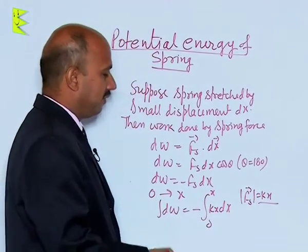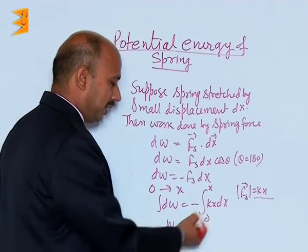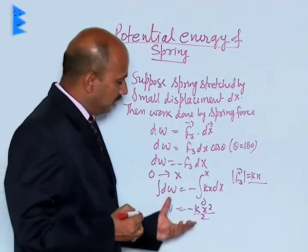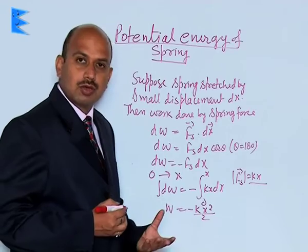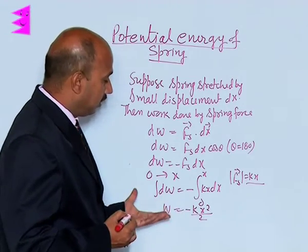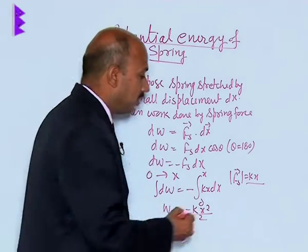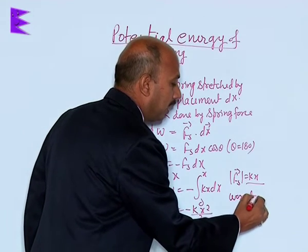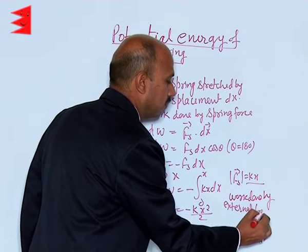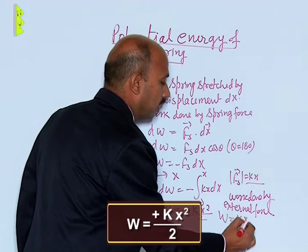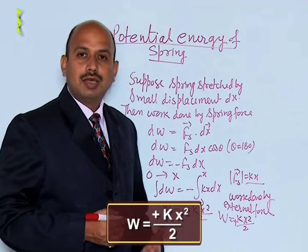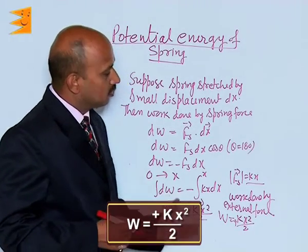Integrating, we get −kx²/2. This is the work done by the spring force. Now, the work done by the external force is the negative of this, so the work done by the external force W = +½kx². This is the formula for the energy stored in the spring.